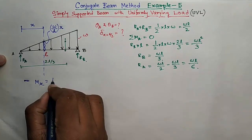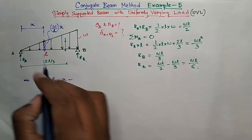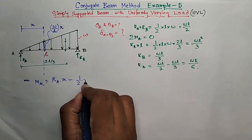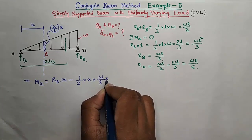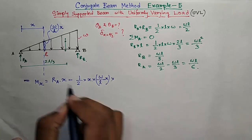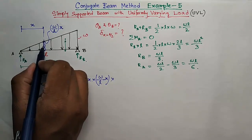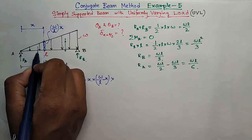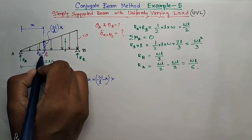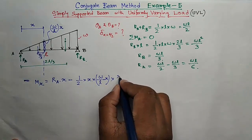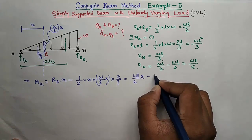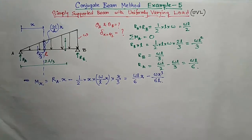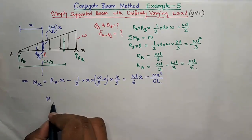The equation will be RA into x minus this area of the triangle, half into x into height is W by L into x, into the CG distance from this point, which will be x by 3. Put the value of RA. So the moment equation is...